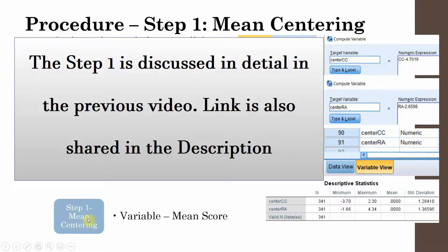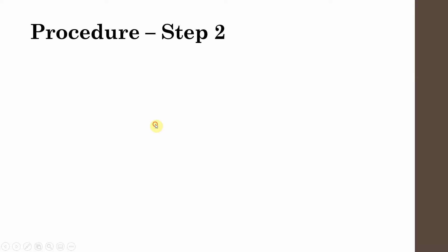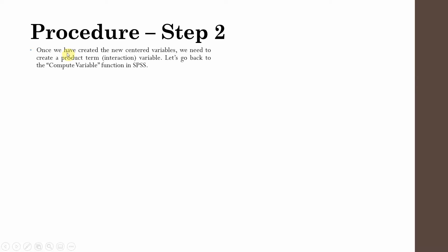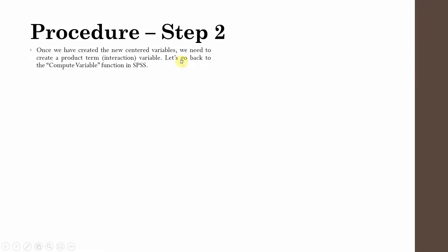Here is our Step 1 for moderation: Mean Centering — variable minus the mean score. Once we have created the newly centered variable,